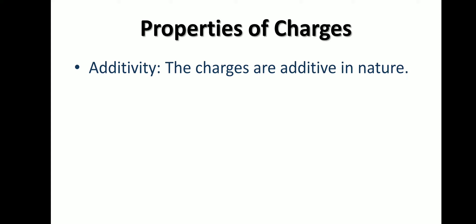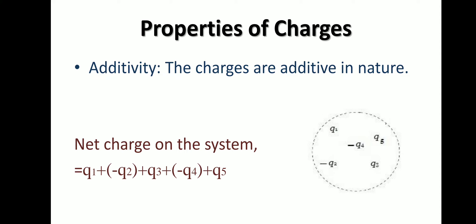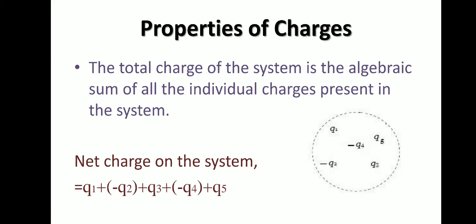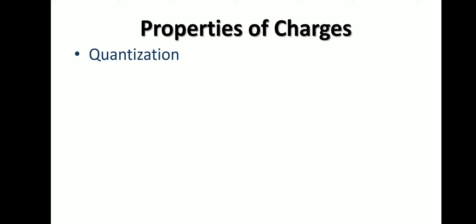The next property is additivity. Charges are additive in nature. Consider a system of charges q1, −q2, q3, −q4, and q5. When we calculate the net charge of the system, we sum up all the charges with their signs — the algebraic sum. So the net charge is q1 + (−q2) + q3 + (−q4) + q5. The total charge of a system is the algebraic sum of all the individual charges present in the system.